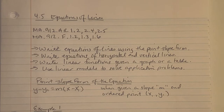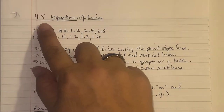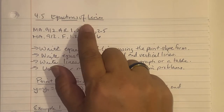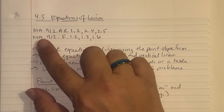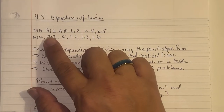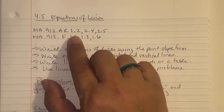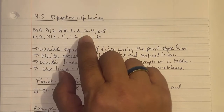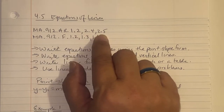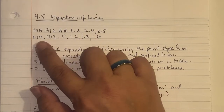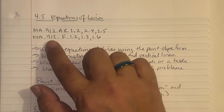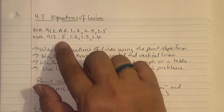Section 4.5: Equations of Lines. We will be using standards MA912 AR1.2, 2.4, 2.5, as well as MA912 F1.2, 1.3, and 1.6.